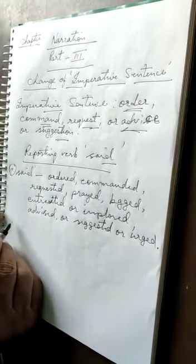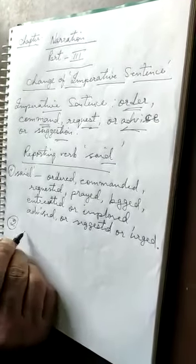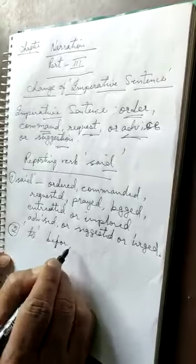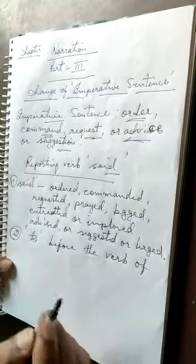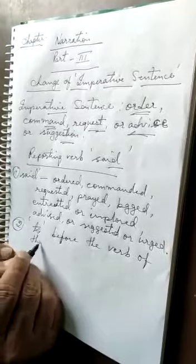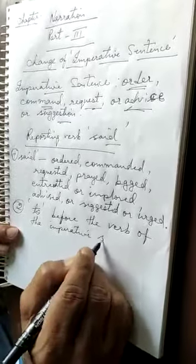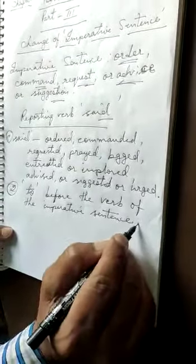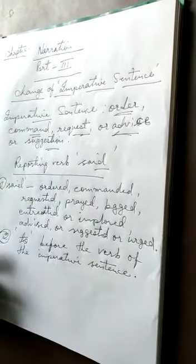The second rule is to use 'to' before the verb of the imperative sentence. These are the basic rules to change an imperative sentence into indirect narration.